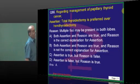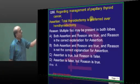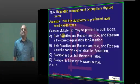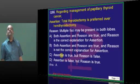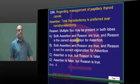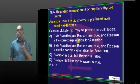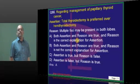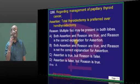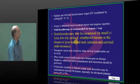Papillary thyroid cancer — total thyroidectomy is preferred compared to hemithyroidectomy. Why? Because papillary carcinoma is known to have multiple foci. If you remove only one half thinking you removed everything — no. There are small foci in the other thyroid lobe also. So total thyroidectomy is preferred; otherwise, recurrence is high.